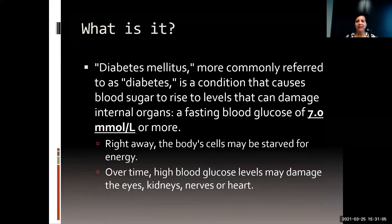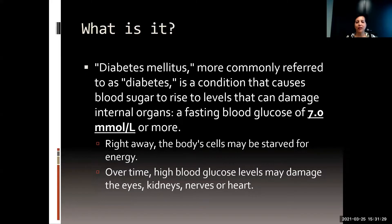So what is diabetes? Diabetes mellitus is a condition where the blood sugar rises to a level that can damage internal organs — a fasting blood glucose of 7.0 or more. The blood cells may be starved for energy and over time high blood glucose levels can damage the eyes, the kidneys, nerves, and the heart.